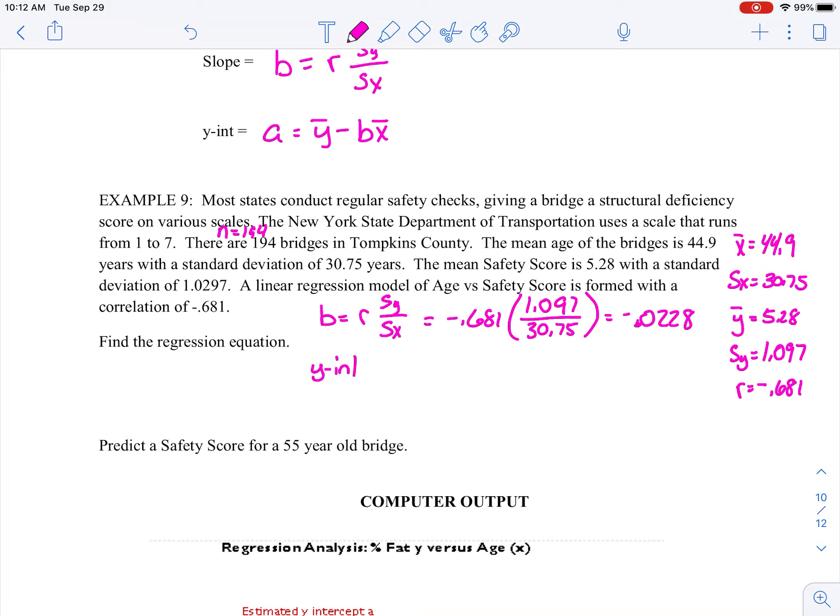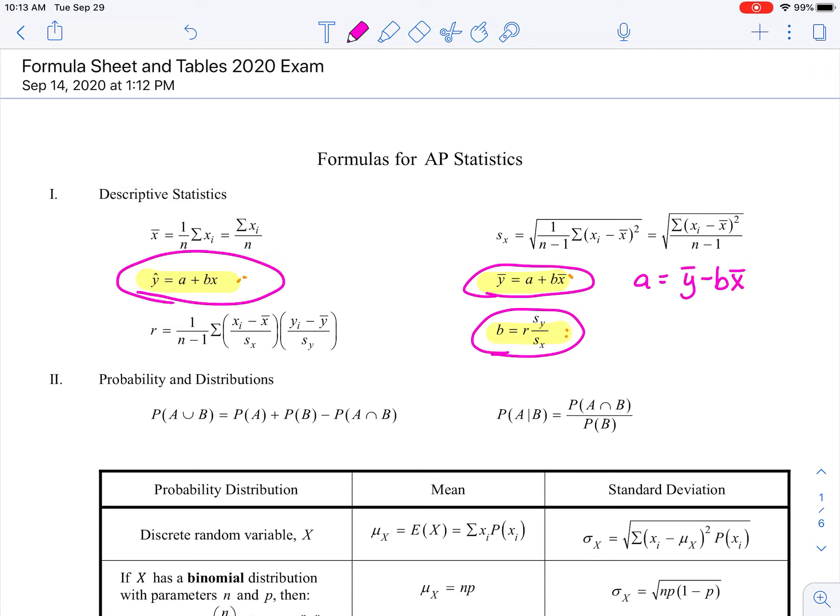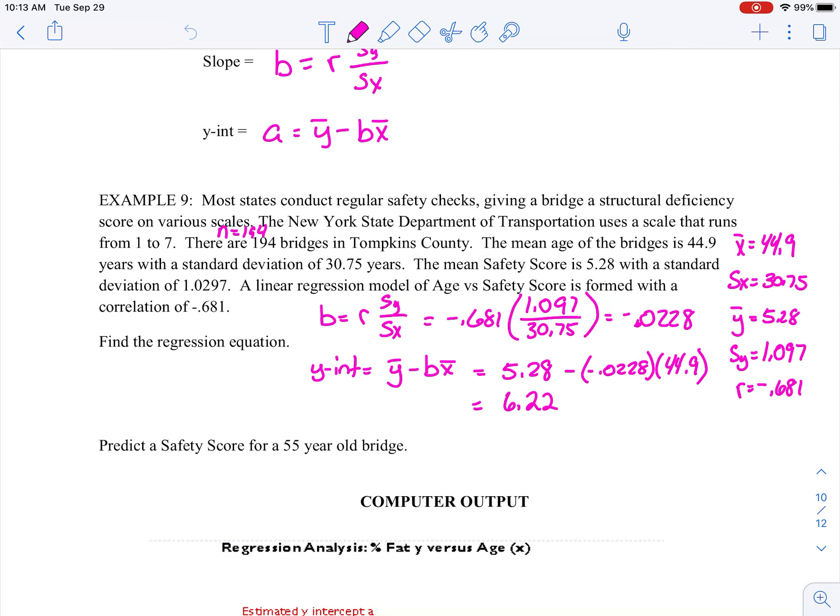Now we need to know that Y-intercept. And again, it is all formula-driven. Y-bar minus B times X-bar. So if we plug that into what we know, I know that my typical safety score is 5.28, but we're going to subtract off negative 0.0228 times my X-bar, which is 44.9. And so we end up with a Y-intercept of 6.22. So now we have all the pieces, parts to make my equation. If we go back again to your formula sheet, we could see that again, now we're going back into this one. So now we're doing that prediction equation. So we're going to have a score-hat is equal to my Y-intercept of 6.22 minus, since it's a negative slope, 0.0228 times X, and X is going to be the age of my bridge.